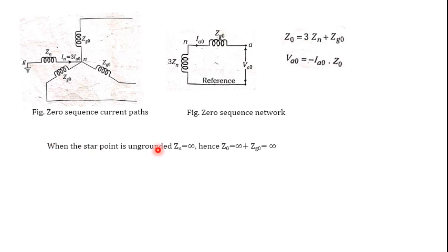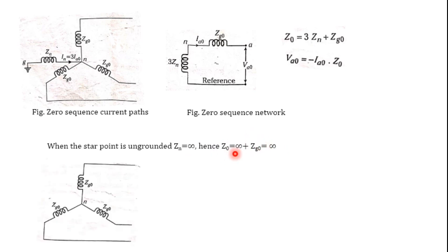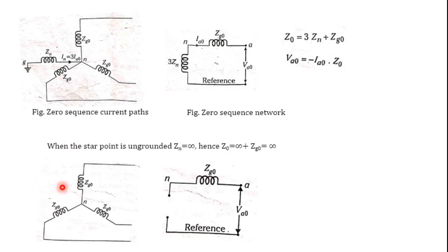When the star point is ungrounded, the neutral impedance is assumed infinite, so Z0 becomes infinite, meaning no zero sequence current can flow. This is an example where the neutral is not connected to ground. This completes the discussion of zero sequence network for the synchronous generator.